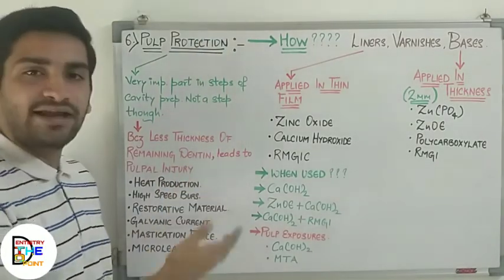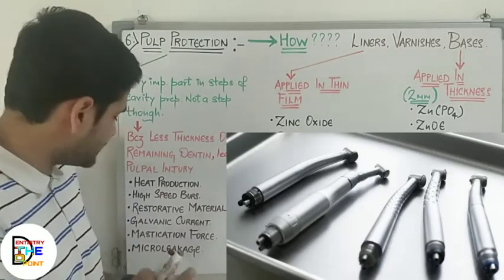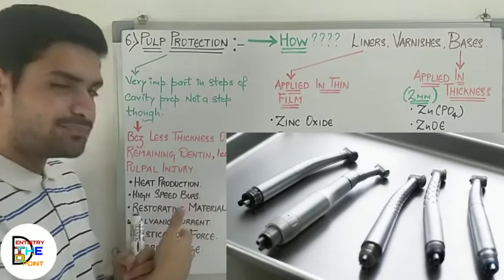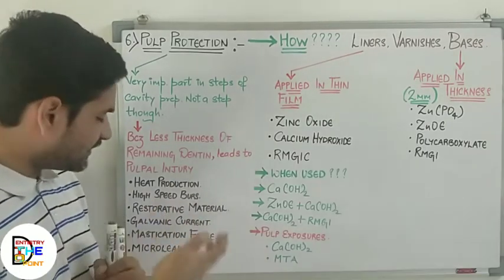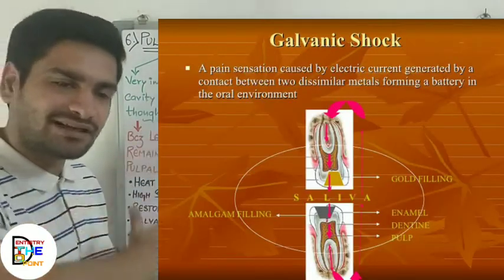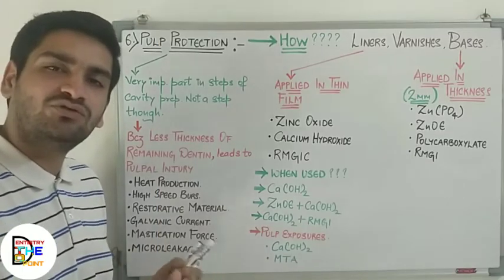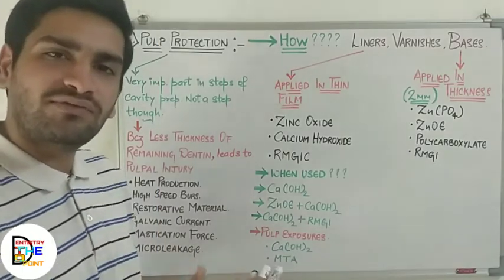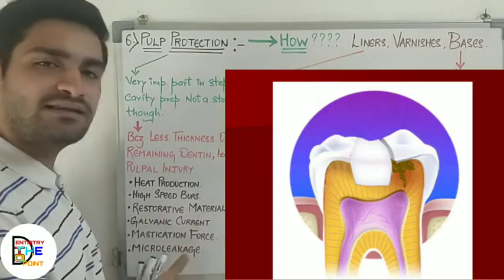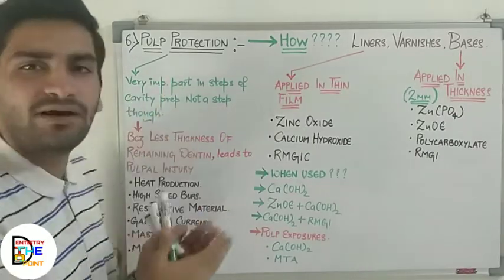The causes include heat production due to friction — there is a high amount of heat production from whichever bur or handpiece you use, high-speed burs, restorative material, and galvanic current which is induced by two different metals in opposing arches. The masticatory forces we generate also affect the pulp in one way or another, and lastly, micro leakage. These are the points which need to be kept in mind regarding pulp protection.